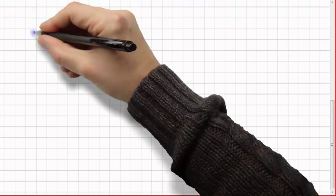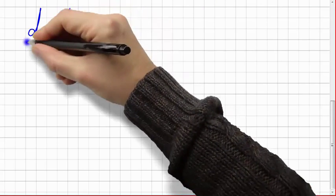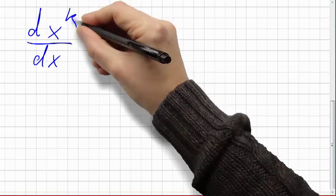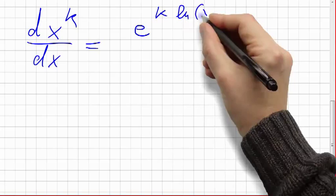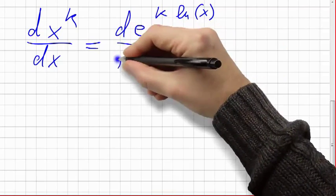Let's compute the derivative of the kth power. The trick is to write the kth power as e to the k natural logarithm of x. And now do the derivative. That's way easier.